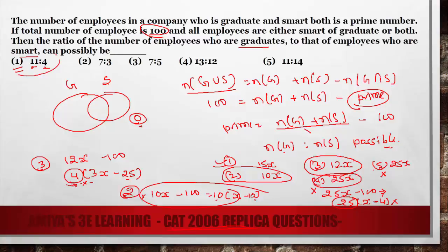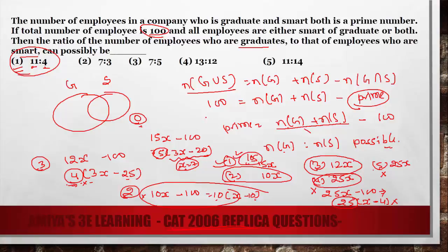Our answer is option number 1 with 15x. Let's verify: 15x minus 100, taking 5 as common gives 5(3x minus 20). For this to be prime, the factor (3x minus 20) must equal 1, which happens when x equals 7. So ng plus ns equals 15 times 7, which is 105. Checking: 105 minus 100 equals 5, which is indeed a prime number. So our answer is confirmed as option number 1.